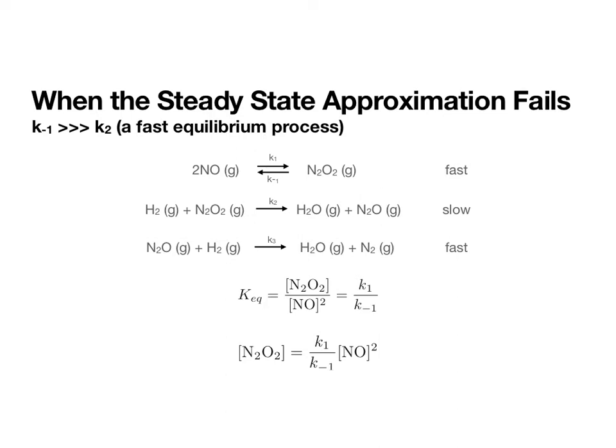With this approximation, we are going to assume that equilibrium of this first step is established quickly. That is the case when K-1 is much faster than K2, or when K2 is much slower than K1. These are the conditions when the steady state approximation is going to fail.